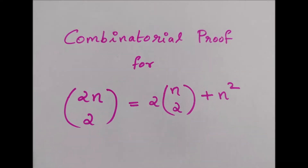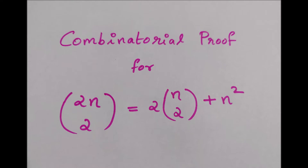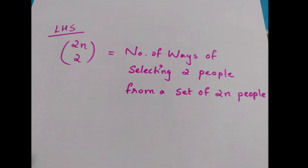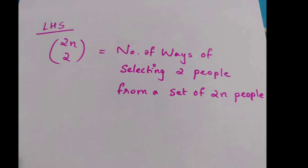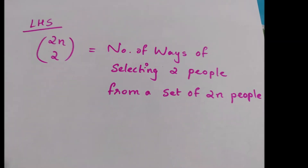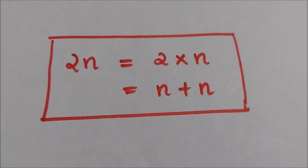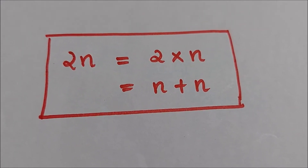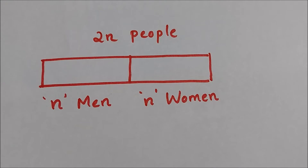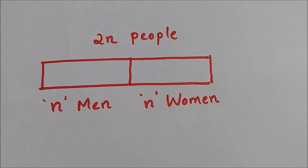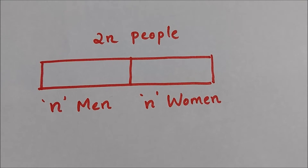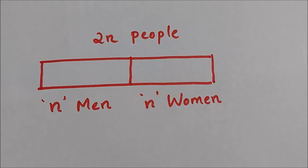Let's see the LHS. LHS is C(2n, 2). We can think of C(2n, 2) as the number of ways of selecting two people from a set of 2n people. Since 2n means n plus n, we can think of the 2n people as n men and n women, so the total of 2n people have n men and n women in it.